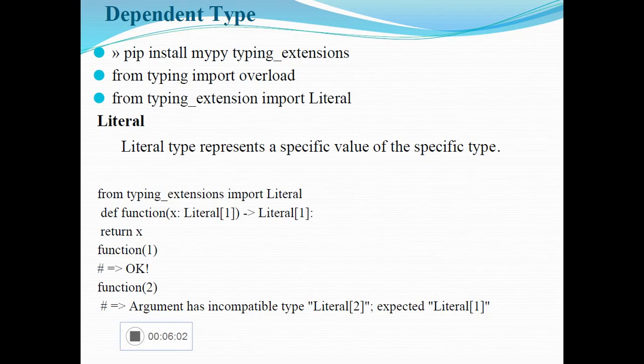How to install dependent type programming in Python: the command is pip install mypy typing_extensions. It will install the corresponding packages. After done the installation, you have to import the packages: from typing import overload, from typing_extensions import literal. Then you have to know about the literal concept. Literal type represents the specific value of a specific type. For example, after importing the required package, div function x literal 1, which implies return of 1. If I am calling function of 1, this statement is correct because it will return the specific value 1 for the specific type literal 1. If I am calling the same literal with a different argument, function of 2, this argument 2 has incompatibility type, whereas we defined only literal of 1.